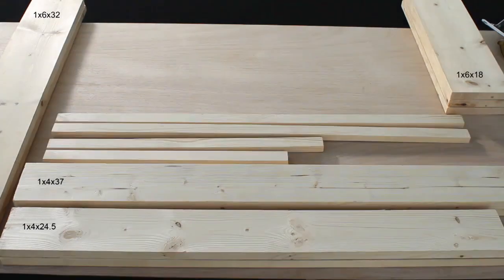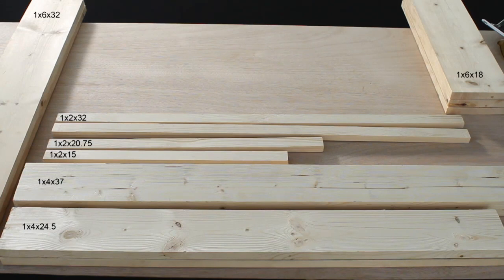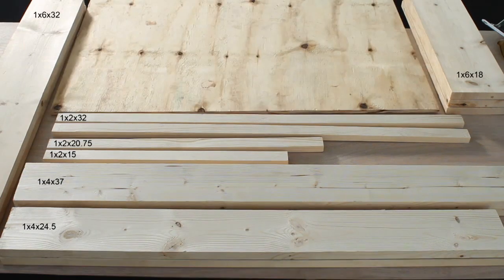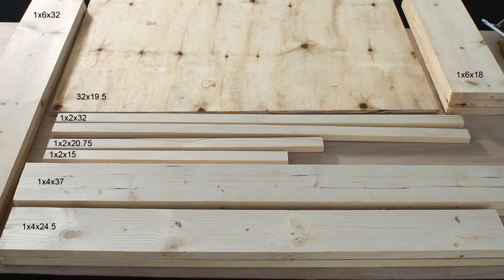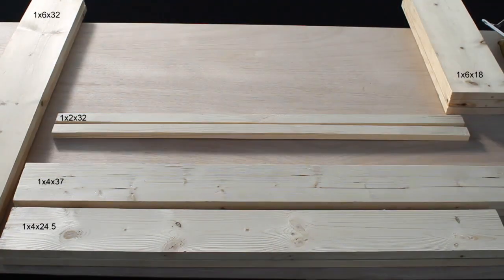Four pieces of 1x2 white wood, two cut at 32 inches, one at 20 and three-fourths inches and one at 15 inches. And finally, a piece of quarter inch plywood sheeting measuring 32 by 19 and a half inches. That's a lot of numbers to throw at you, but it's important to get the right measurements.